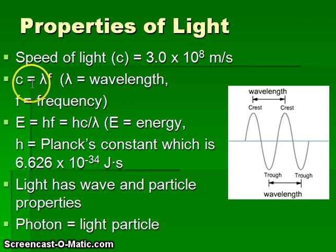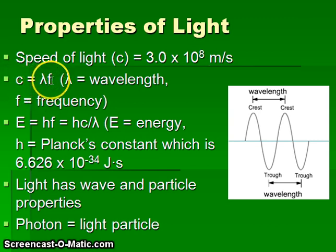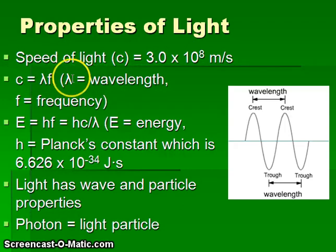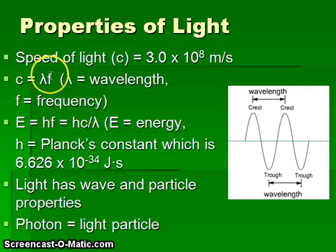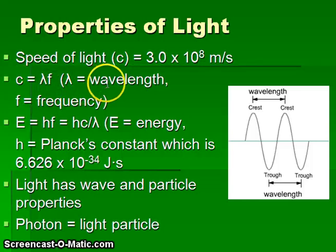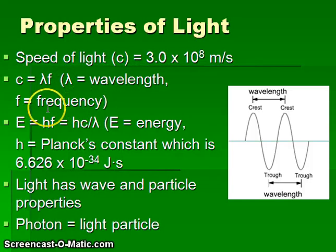This equation relates the speed of light, c, the wavelength — this is lambda — and f for frequency. So the speed of light equals the wavelength multiplied by the frequency of light.